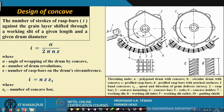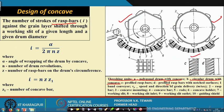The threshing unit A is a polygon drum with concave, and threshing unit B is a circular drum with concave. Profile C is the profile rasper, and D is the profile rasper with notch surfaces — you can see the notch surfaces which are there. There is also a band conveyor shown here, with Vp indicating the speed.